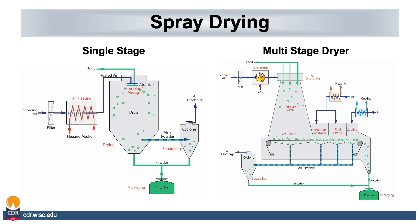There are two types of spray dryers used in the dairy industry: single stage and multi-stage. A single stage dryer is where a single chamber is used to dry the product and create the powder. A multi-stage dryer is where there is a primary drying chamber but then there are multiple chambers to dry the product after the initial stage. With spray drying you can use different types of heating — a direct flame to heat the air for drying, as shown in the multi-stage dryer picture, or an indirect heating method as described in the spray drying diagram on the left.